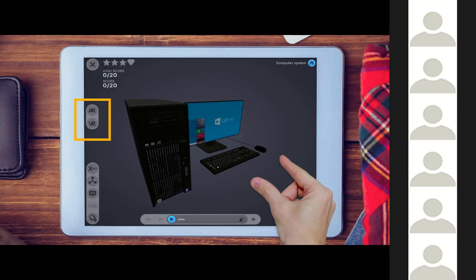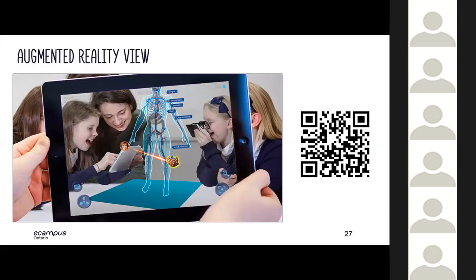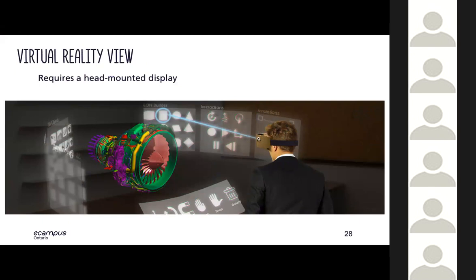Augmented reality view — where the digital 3D model overlays a real-world setting — is made possible by scanning a QR code with a mobile device. Virtual reality view is made possible through head mounted displays, which allow users to insert a smartphone and place it in front of their eyes. We are aiming to provide successful applicants with a few head mounted displays to get started, and it is compatible with standard displays like Google Cardboard.